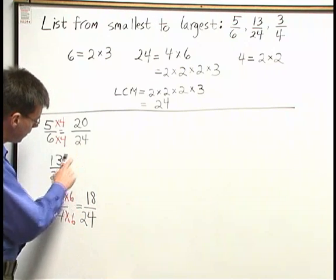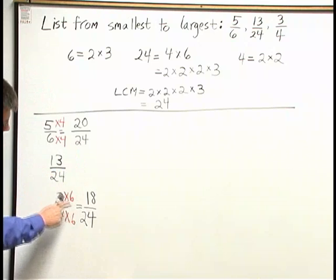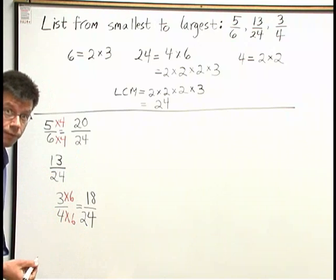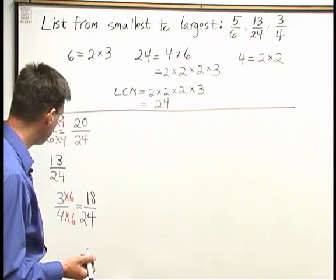Now, I have 20 24ths, 13 24ths, and 18 24ths. I can write those three fractions in order.